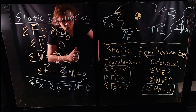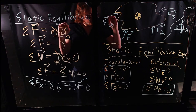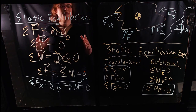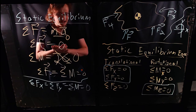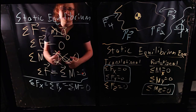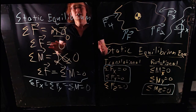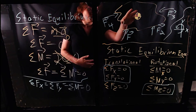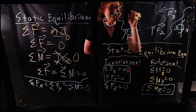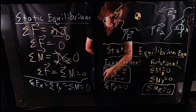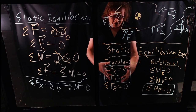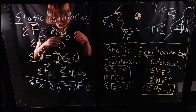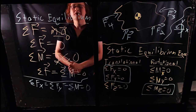If we have 4 unknown forces, we need 4 equations, but we only have 3 equations of static equilibrium in a 2D case. Systems with too many unknowns are referred to as statically indeterminate, and we'll be looking at that in later discussions.